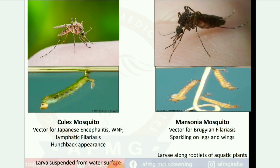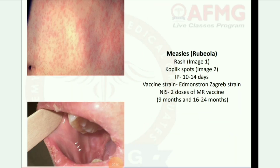Next image: Culex mosquito — vector for Japanese encephalitis, West Nile fever, lymphatic filariasis, and has a hunchback appearance. Next image: Mansonia mosquito — vector for Brugian filariasis, has sparkling on legs and wings, and larvae attach along rootlets of aquatic plants.